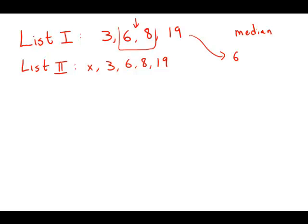So the median of this first list is the average of 6 and 8, and that is, of course, 7.